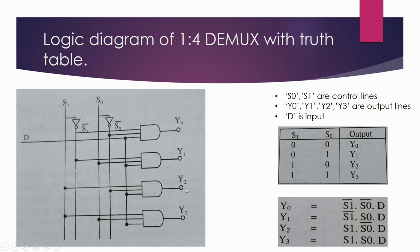I'll show why Y2 was not selected for the last example with s1s0 equal to 1 1. The 1 from s1 is going to Y2, so one input of that AND gate is 1. But the second input is connected to s0 bar, so 1 gets converted to 0. Zero is passed through, making 1 AND 0 equal to 0, so Y2 is turned off and the value at D does not pass through to Y2.